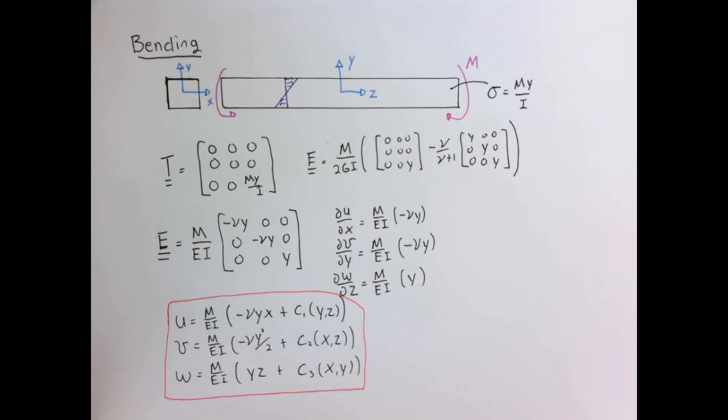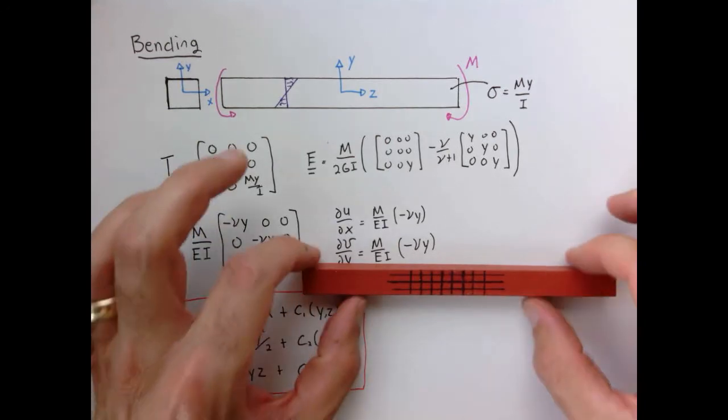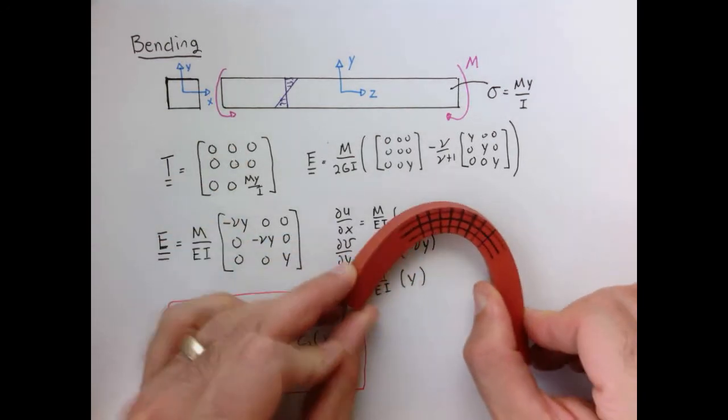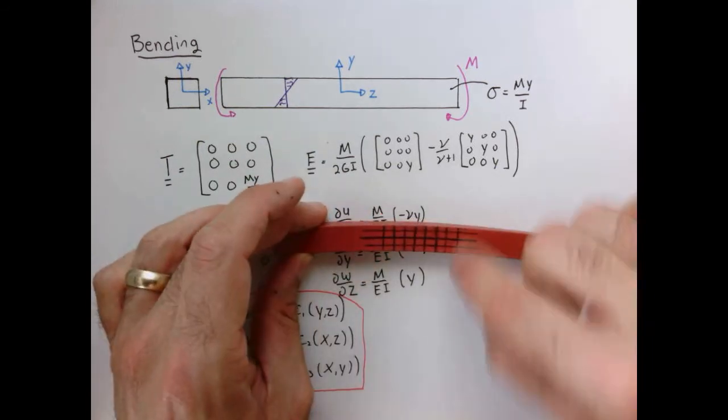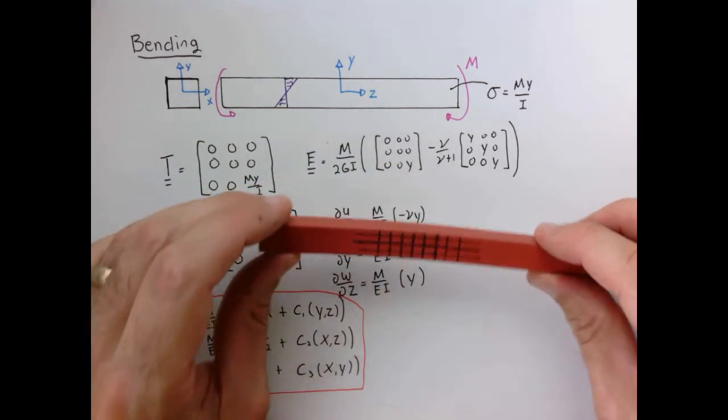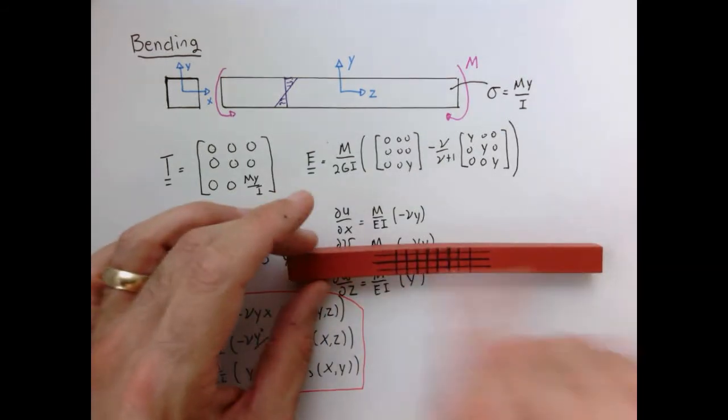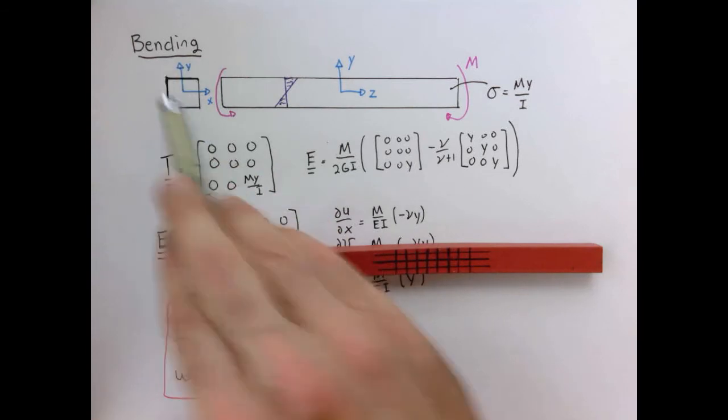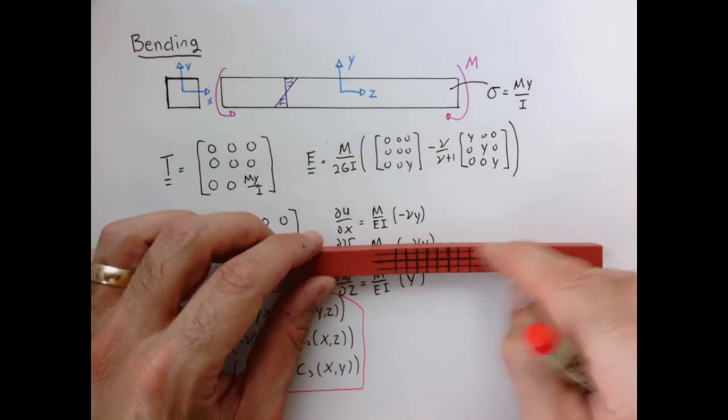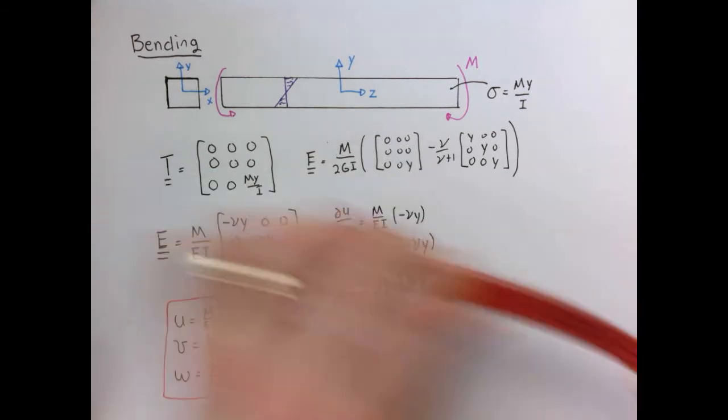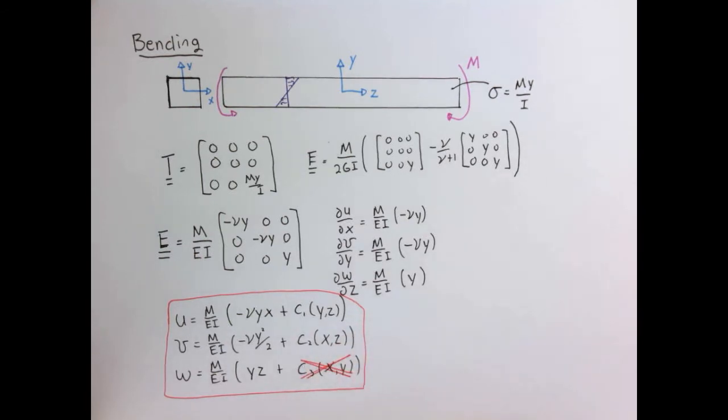Now we're going to use a few observations to simplify things before we go further. If you remember when we looked at our bar in bending, this is my Z direction. When I bend it, even very extremely, you notice that these lines here stay straight. They spread out radially around the arc, but the vertical lines stay straight. What that means is that the displacement in the W direction shouldn't have a component that depends upon its place in the plane.